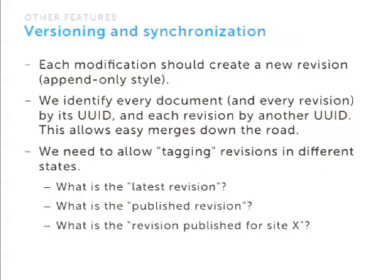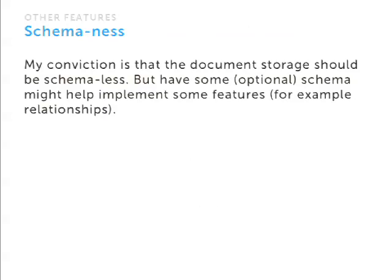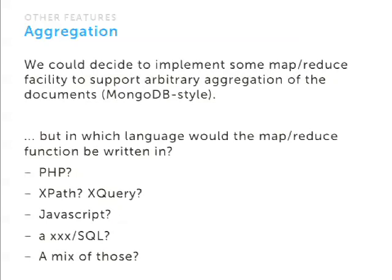One of the main design constraints is to allow easy synchronization — to kind of solve the staging issue. The idea is to use UUID everywhere, both for the identifier of the document and the identifier of the revision, and to work in a purely append-only way. I'm convinced we need to allow tagging of revisions in different states — query the datastore for the latest document, for published versions, or for published versions for site X if you have a multi-site instance. We could also implement aggregation like MongoDB-style map-reduce.